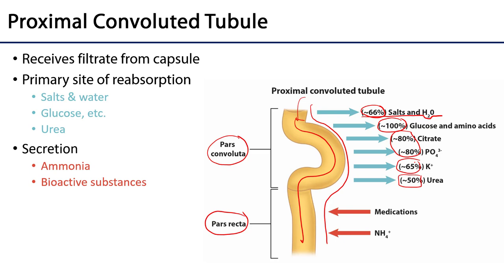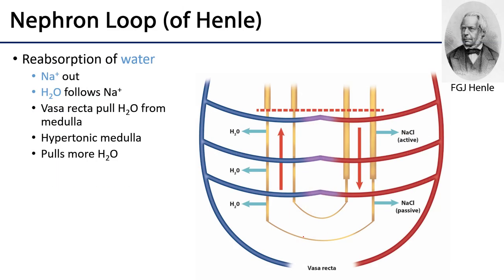The PCT is primarily about reabsorption but not exclusively. There is also some secretion: various bioactive and pharmacological substances can be secreted into the proximal convoluted tubule, and ammonia as a byproduct of cellular metabolism can also be excreted there. From the pars recta, filtrate moves into the nephron loop.